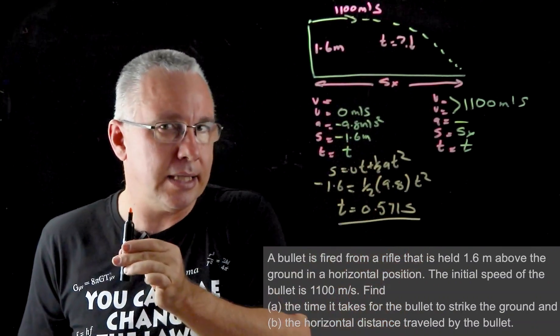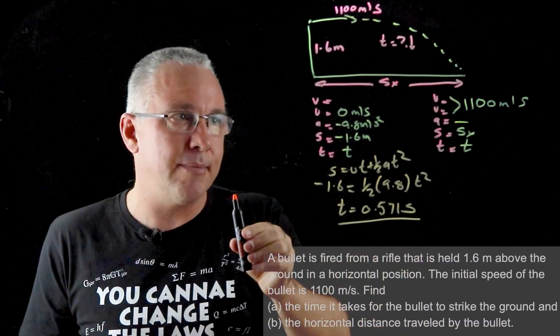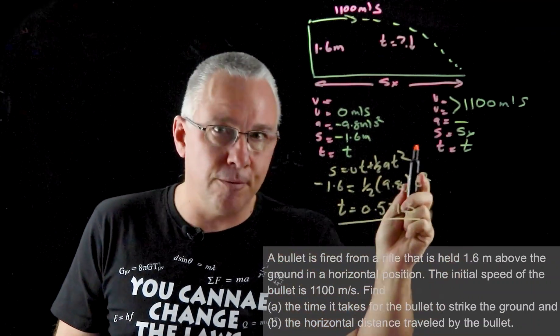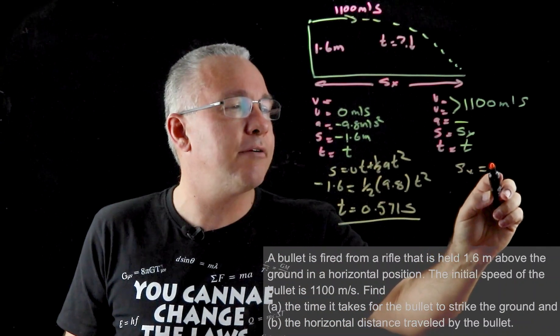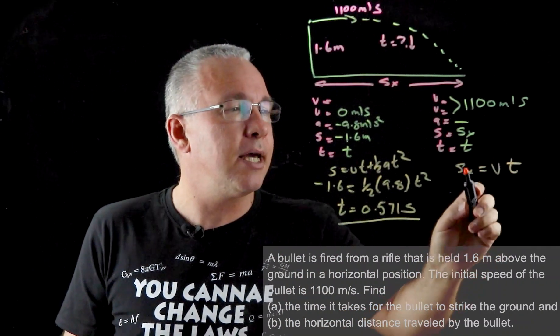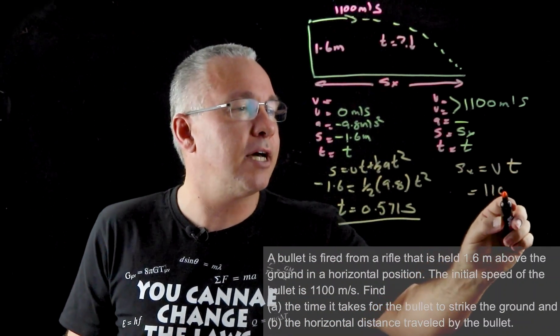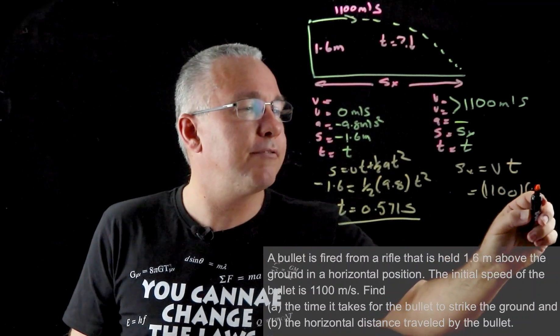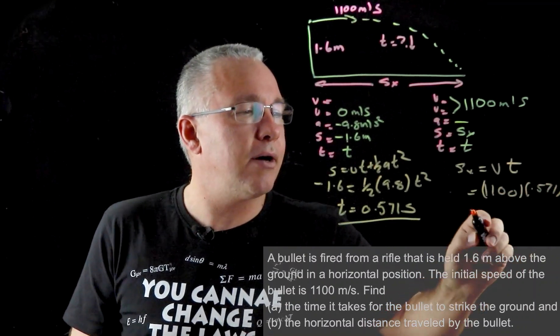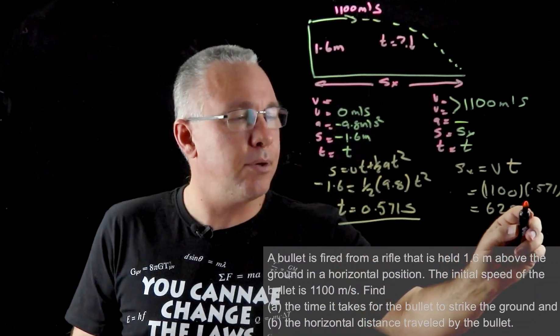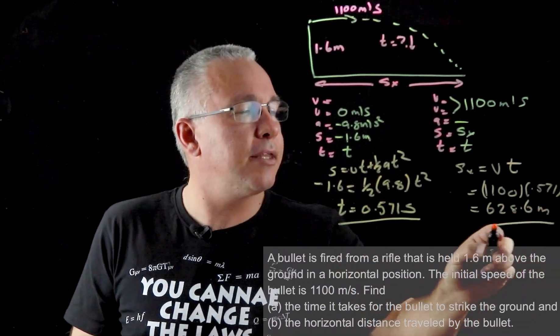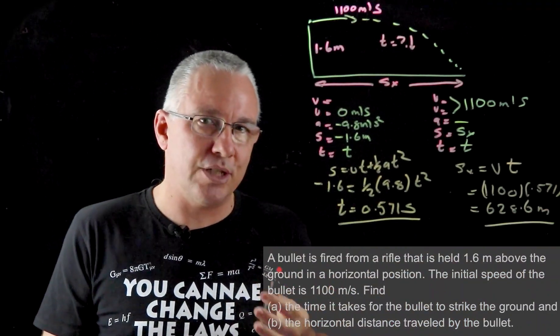So that's the time it takes to go down and now we also know that that's the time it takes to go across. So what's our formula, our equation? In this case our displacement is always equal to the average velocity multiplied by the time. Since our velocity is 1100 and our time is 0.571, we now have a final velocity of 628.6 meters, and there is our solution to our projectile motion problem.